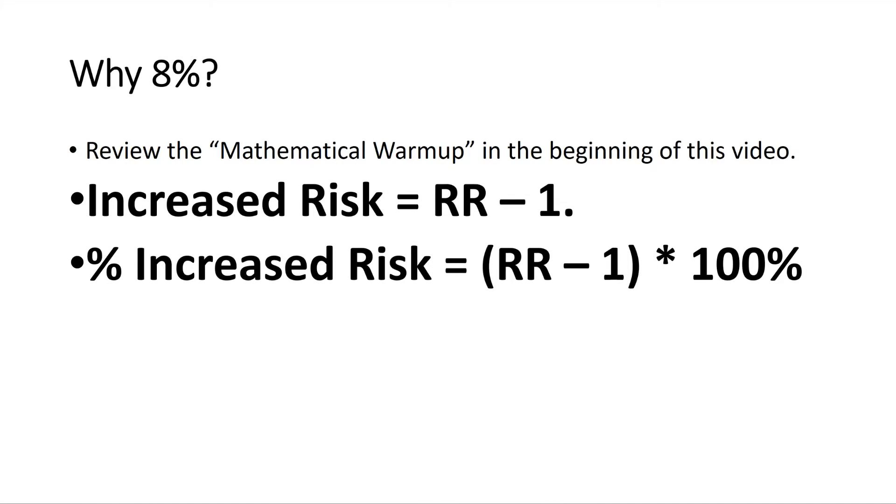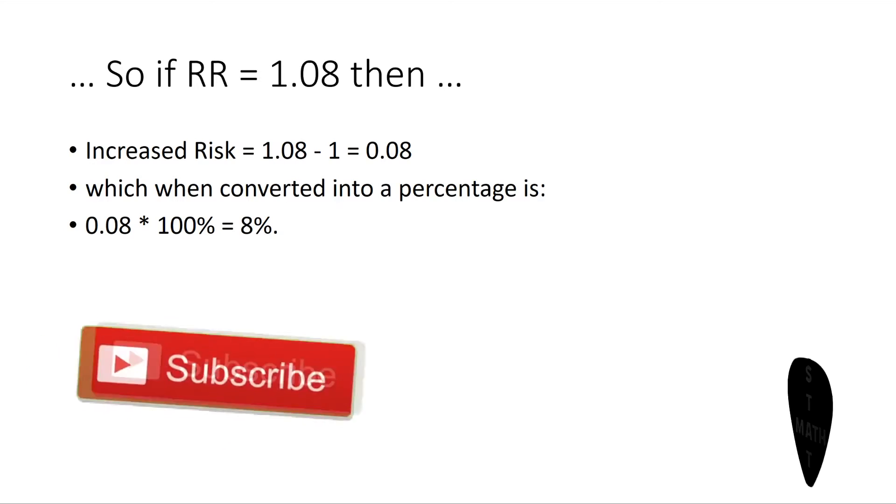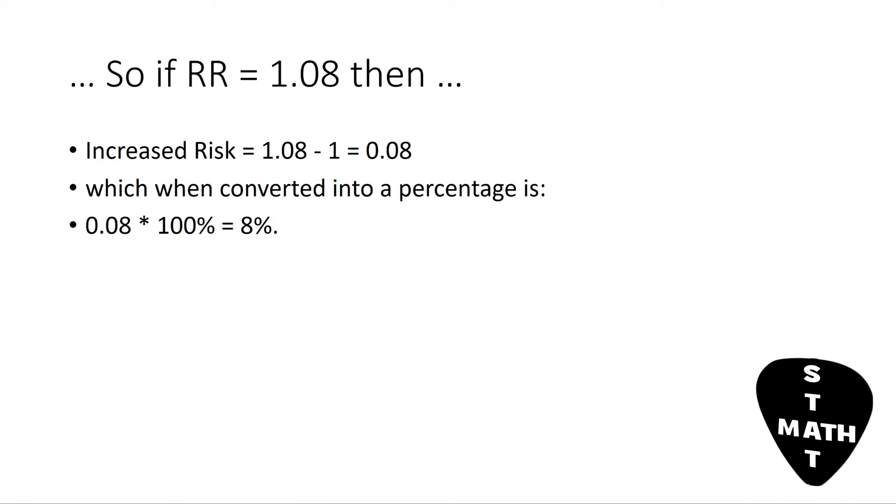Percent increased risk is relative risk minus 1 quantity times 100%. So if relative risk is 1.08, then increased risk equals 1.08 minus 1, which is 0.08, which, when converted into a percentage, is 0.08 times 100%, which is 8%.